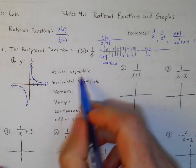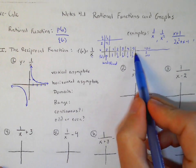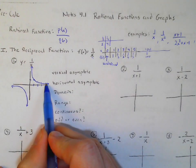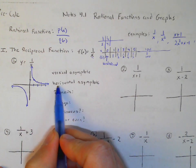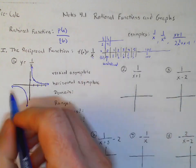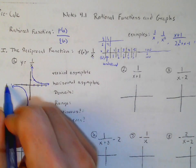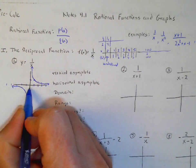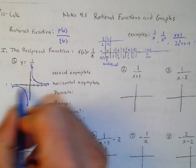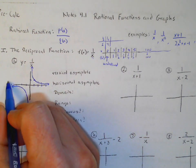We have something called asymptotes. As I keep going and getting bigger and bigger x's, this gets smaller and smaller but it'll never actually be zero. Same thing over here — if I keep going more negative, it gets to like negative 0.1, negative 0.0001, but it'll never actually touch zero or cross it.